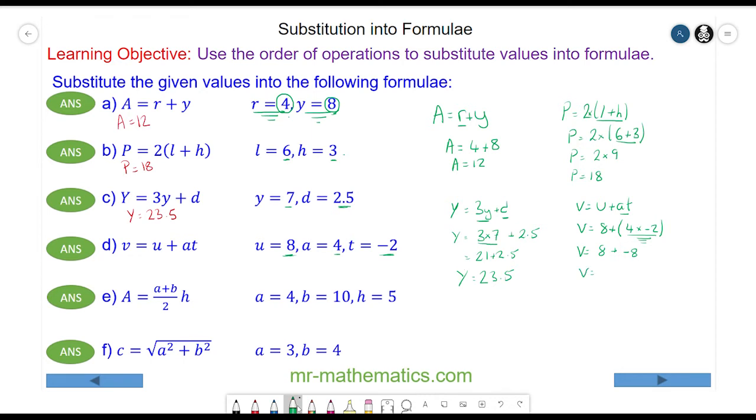So v equals, we're adding a negative so that becomes a subtraction, 8 take away 8, which is 0.